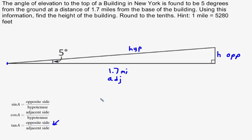And it says that if I use the tangent function and take the tangent of the angle A, and my angle A is 5 degrees, that would be equal to the opposite side, which is H miles, divided by the adjacent side, which is 1.7 miles.